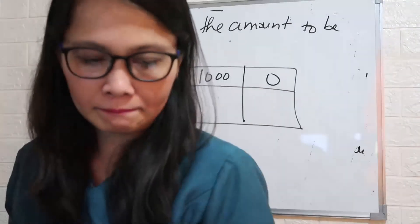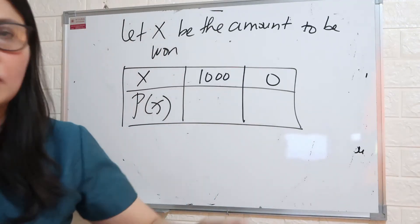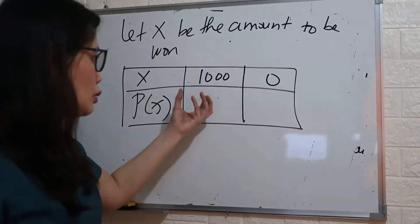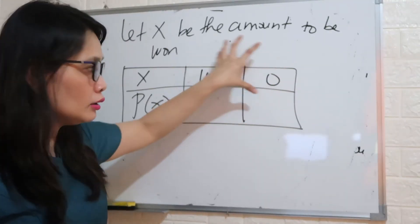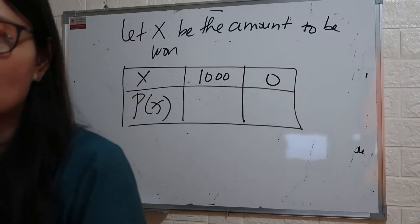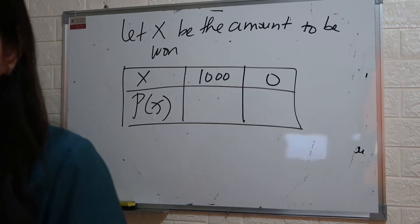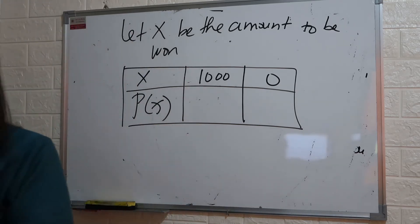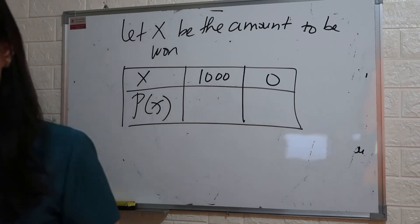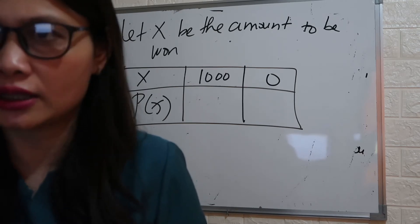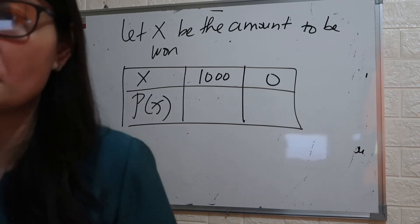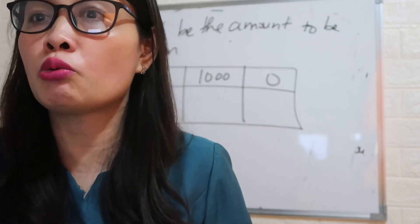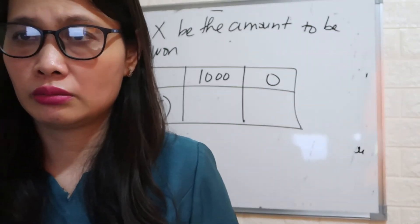So what is the probability of getting 1,000 as the winning prize? The organizer will sell 300 tickets. So the probability of getting 1,000 — of being the winner — is 1 over 300. And the probability that you're not winning, getting 0, is 299 over 300. Because out of 300 tickets, only one can win.